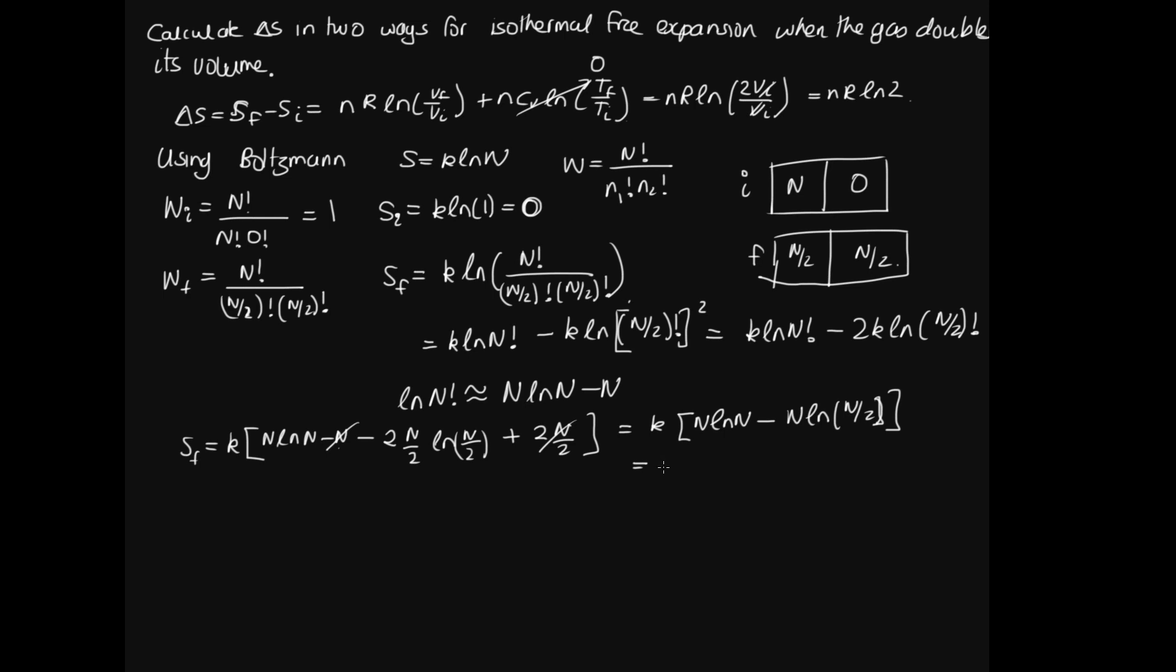So let's pull N out the front. So we've got K N and then we've got log N minus log N on 2. Now when we subtract logs, we can just divide. So this is K N log N over N on 2. And so this is equal to K N log 2. And now we're almost to what we had before.